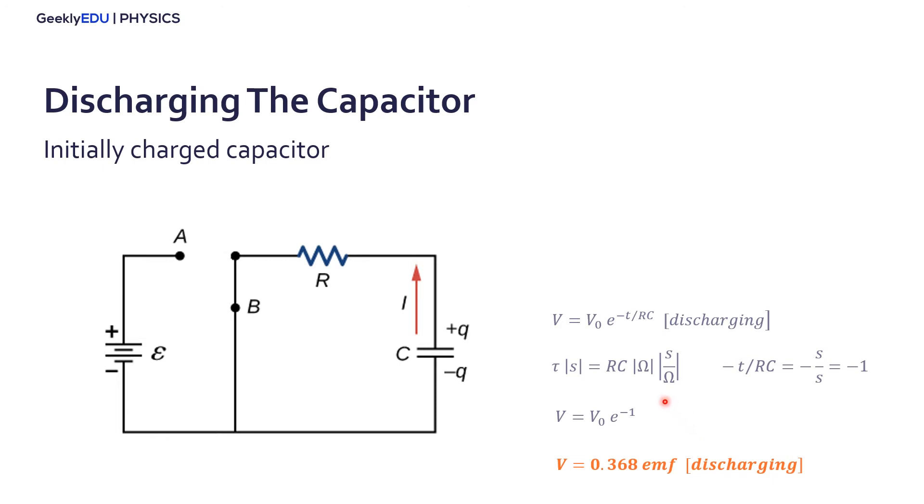So what does it mean? Again, if we plot voltage on the capacitor versus time, we have a curve like this, an exponential. But now it's discharging at 0.368 times the initial charge, the initial voltage.